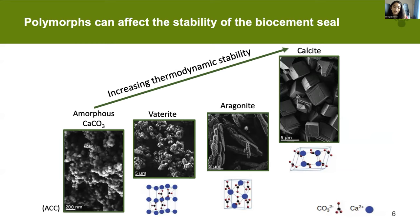We want these bio-cement seals or sequestered precipitates to be long-term and stable. Stability comes into question when you want specific polymorphs of calcium carbonate to form. Generally it's accepted that calcium carbonate precipitation starts out as amorphous calcium carbonate — a non-crystalline form — which rapidly transforms to either vaterite or aragonite, and then finally into calcite, which is the most thermodynamically stable phase. Vaterite, aragonite, and calcite are all calcium carbonate, just with different atom packing. Obviously if I want to look at something at the atom packing level, I need the microscale.